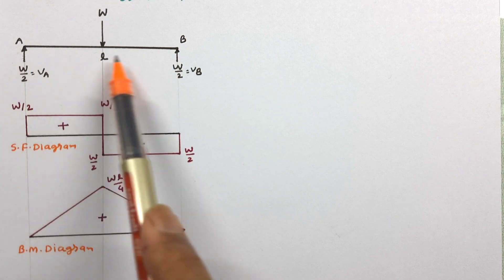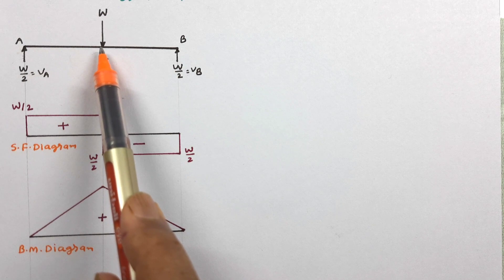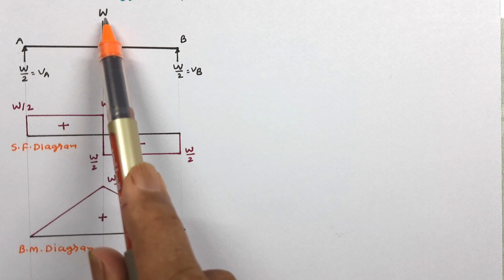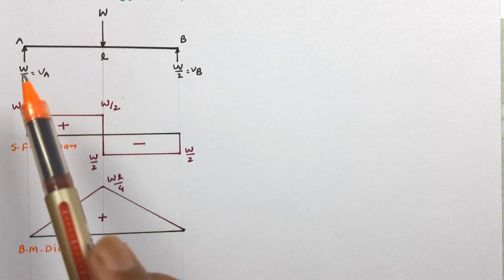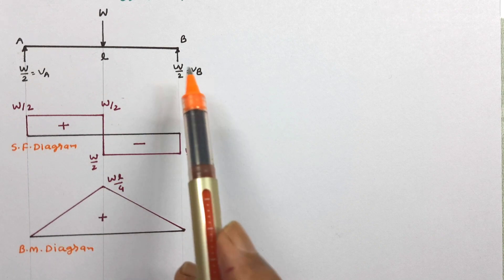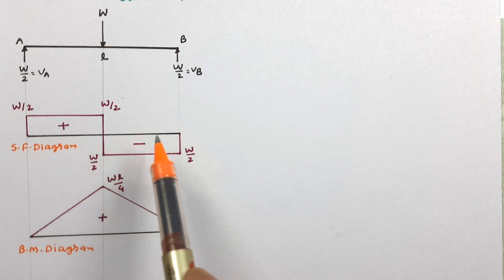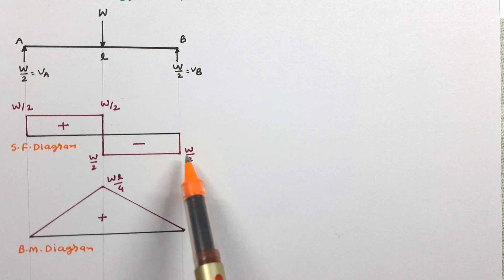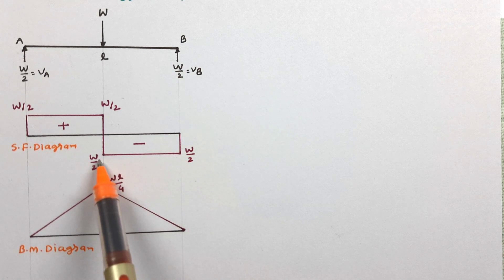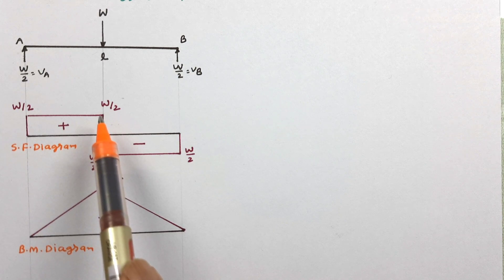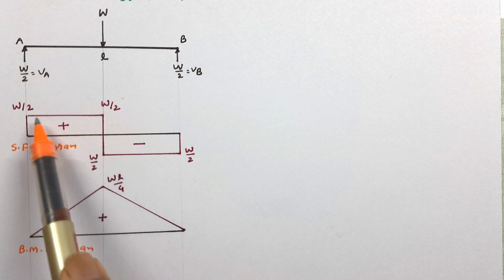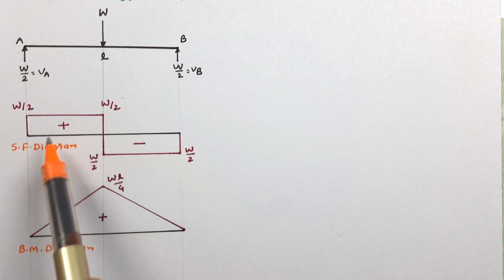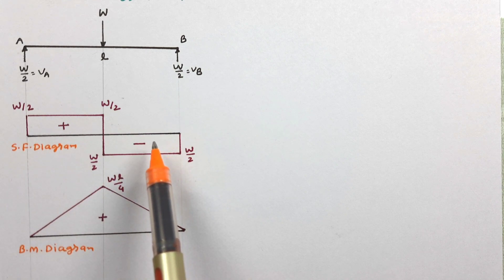Here in this figure, we can see a simply supported beam subjected to a central point load of W. As the beam is symmetric, the reactions VA and VB are both W/2. A diagram is shown here which depicts the variation of shear force across the length of the beam. At the left portion, the shear force is minus W/2, continuing up to the midpoint. After the midpoint, it becomes plus W/2 for the right portion.